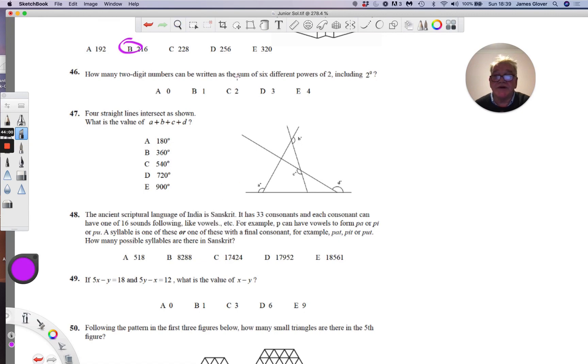How many two-digit numbers can be written as the sum of six different powers of two, including two to the power of zero? So if we write down these numbers: two to the power of zero, two to the power of one, two, three, four, five, six.